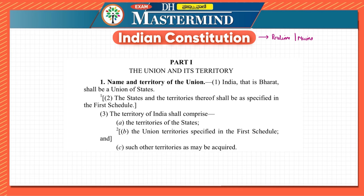Before we proceed with Part One, let us first understand the schedules of the Indian Constitution — this is one of the most repeated topics in examinations. We will be recalling and linking to them constantly. To remember all the schedules there is a mnemonic which everyone uses: 'TIERS OF OLD PM'. We'll understand it from the basics. It goes in order from the first schedule to the twelfth schedule.